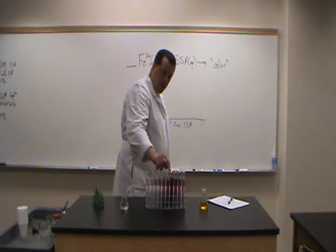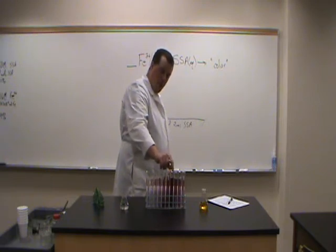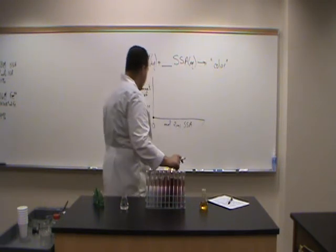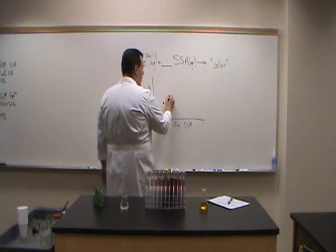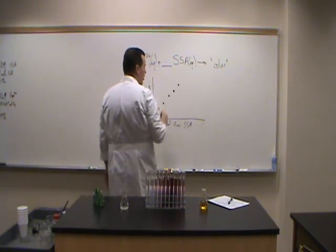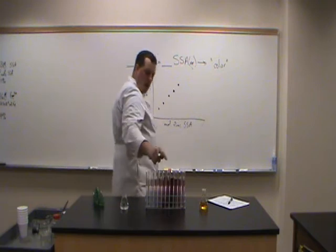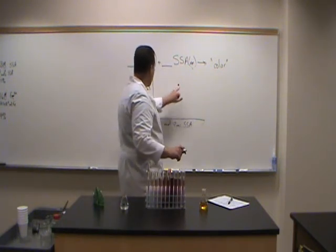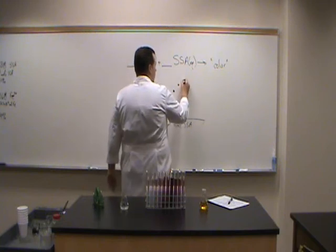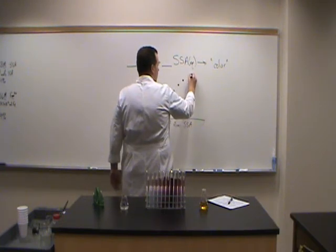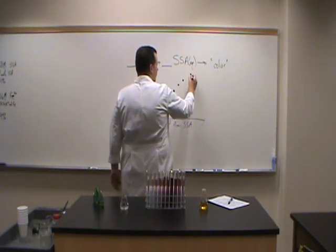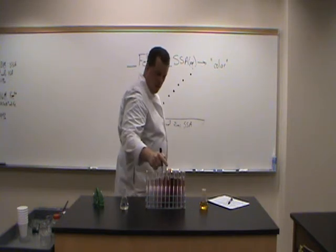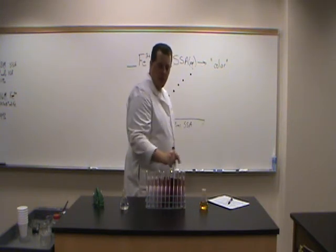It increases and increases until about this sample. So if I plot those, after it gets past this one, 2, 3, 4, 5, 6, 7, the color fades away. The color decreases again.